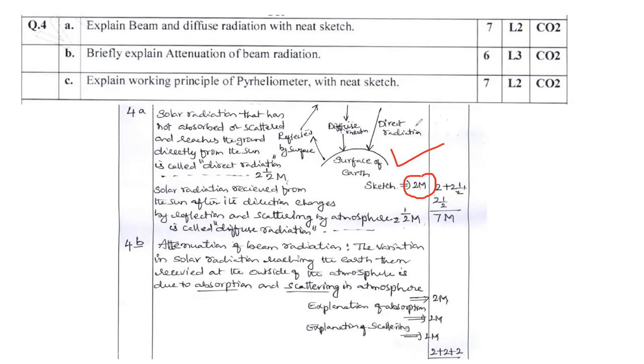Here you can mention about the diffuse radiation, direct radiation reflected by the surface. All the things you can mention very clearly. Here definition also mentioned for your reference. The solar radiation that has not absorbed or scattered and reaches the ground directly from the sun is called direct radiation. Solar radiation received from the sun after the direction changes by reflection and scattering in the atmosphere is called diffuse radiation. The definition is given clearly. Try to write in the same fashion because it's a definition. Definition will be written in standard form only.